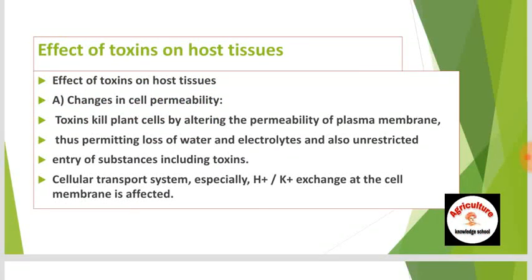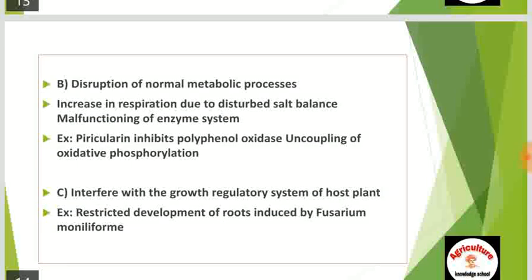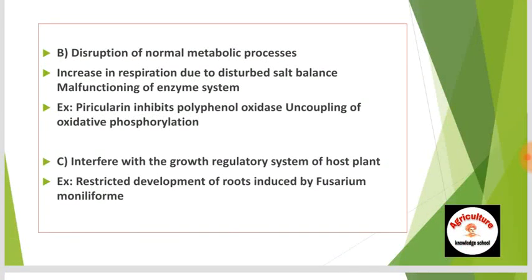Regarding the effect of toxins on host tissues: first, changes in cell permeability — toxins kill plant cells by altering the permeability of the plasma membrane, permitting loss of water and electrolytes and unrestricted entry of substances including toxins; the cellular transport system, especially H+/K+ exchange at the cell membrane, is affected. Second, disruption of normal metabolic processes — increased respiration due to disturbed cell balance; malfunction of enzyme systems (e.g., pyricularin inhibits polyphenol oxidase); uncoupling of oxidative phosphorylation; and interference with the growth regulatory system of the host plant, for example restricted root development induced by Fusarium moniliforme.